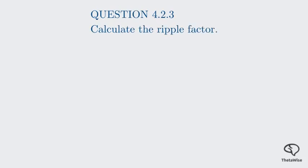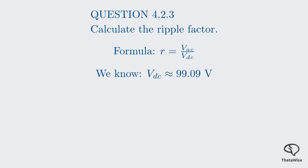Next, we'll calculate the ripple factor — a measure of how smooth the DC output is. A smaller ripple factor means a smoother, higher quality DC supply. The formula for the ripple factor R is the ratio of the RMS voltage of the AC component of the output to the DC voltage: R = V_AC ÷ V_DC. We already know V_DC is about 99.09 volts. But V_AC here is the RMS voltage of the ripple component only — not the 110 volts we calculated before, which was the RMS of the total output including the DC part.